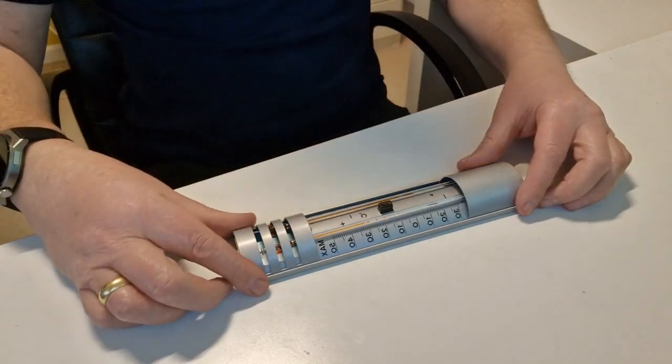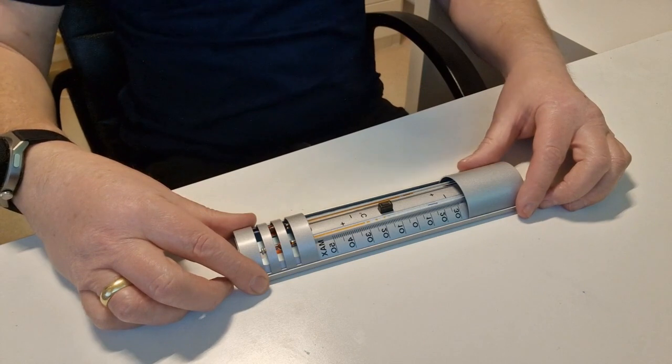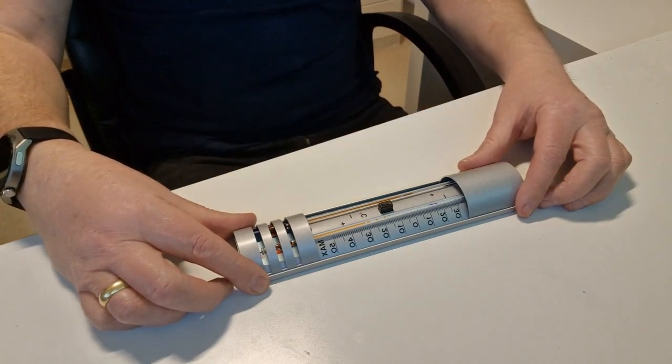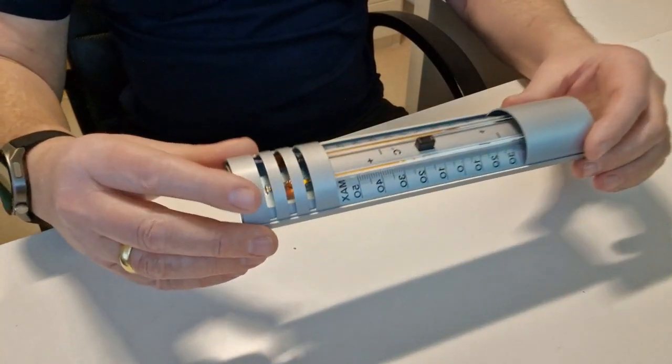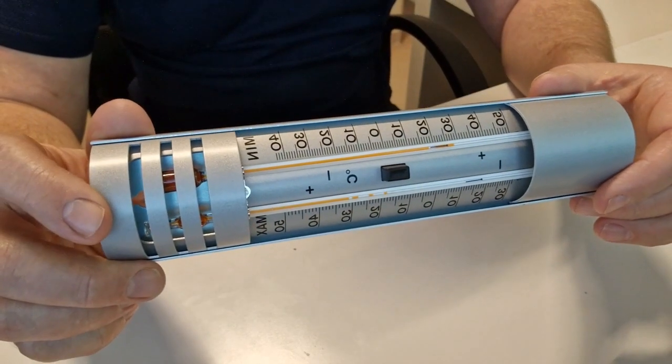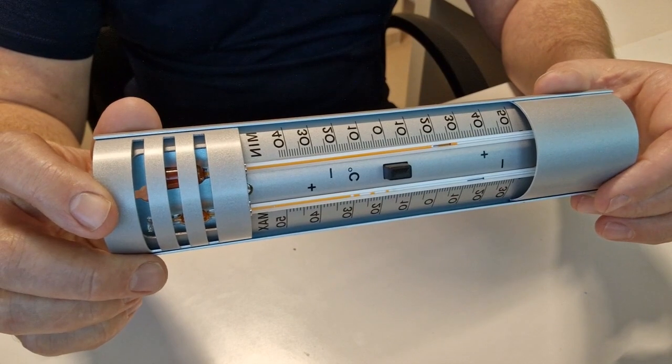What happens is when the courier collects from us, some of those parcels are manhandled and possibly dropped. What that does is it causes the liquid to split. It doesn't matter how well we pack them, they still manage to do it.